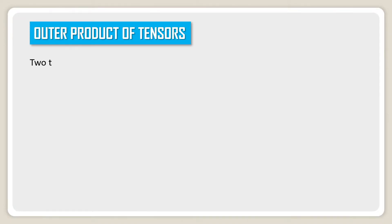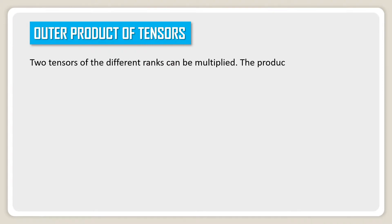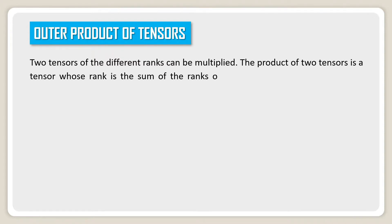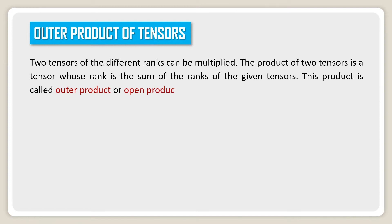Outer product of tensors. Two tensors of different ranks can be multiplied. The product of two tensors is a tensor whose rank is the sum of the ranks of the given tensors. This product is called the outer product, or open product, of the two tensors.